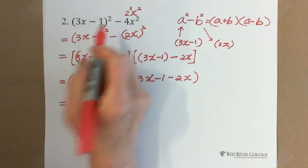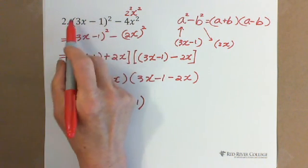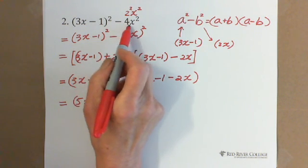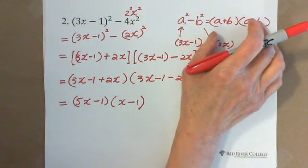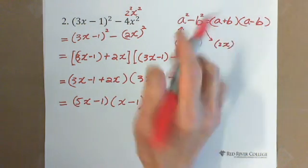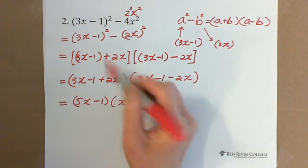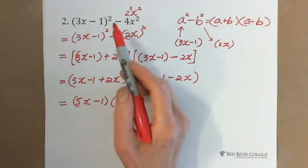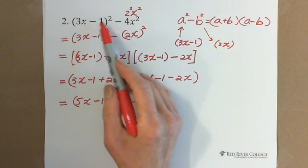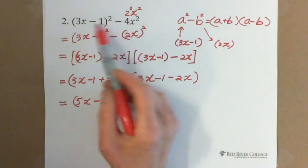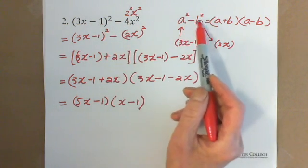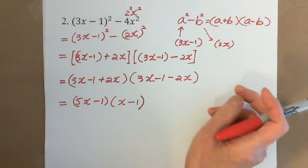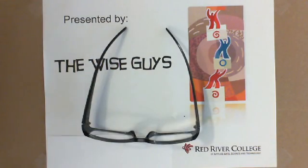You may have another idea — expand the bracket first, combine with 4x squared, then factor again without using the formula. That's valid, but this method using the difference of squares formula is much faster. For more complicated questions, expanding can be difficult, so applying the a squared minus b squared formula is easier. This is presented by Wise Guys. Thank you.